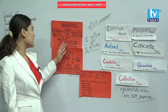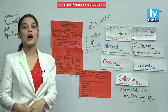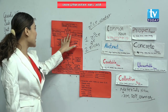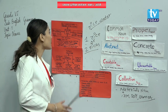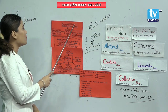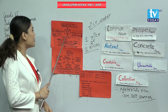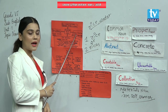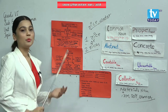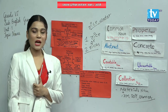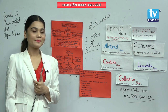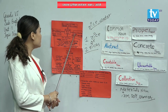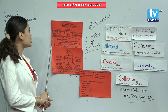Now let's go to another topic — that is the formation of a noun. How are nouns formed? Formation of a noun: as a subject of a verb, as an object of a verb, and as an object of a preposition. Do you get how noun is formed?